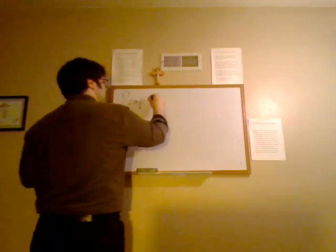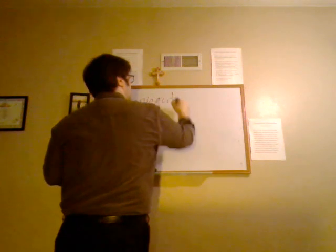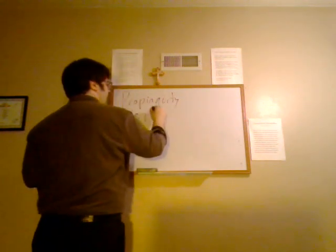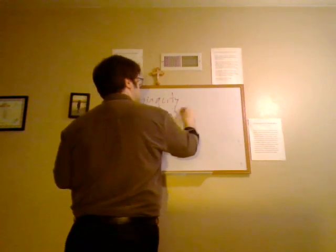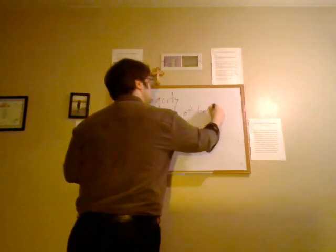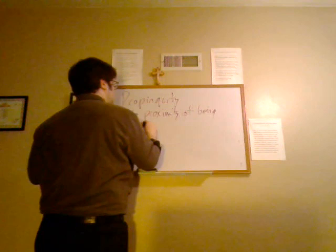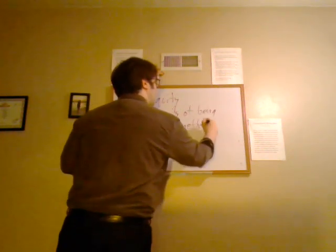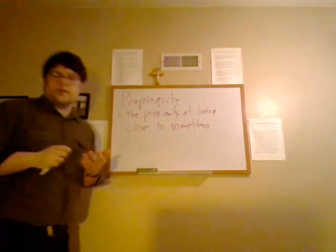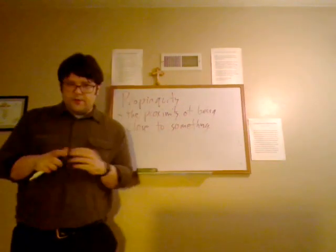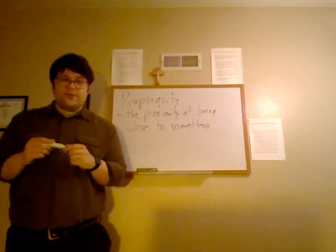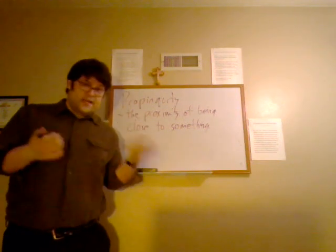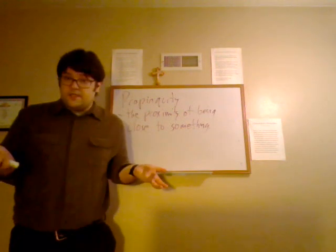One of them is propinquity. Now propinquity is just the proximity of being close to something, but the term is used to refer to how people tend to choose their various mates or their romantic partners. Because if you think about it, if you go to STM, you're most likely going to date someone who's also from STM just because your proximity is close.